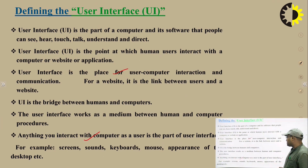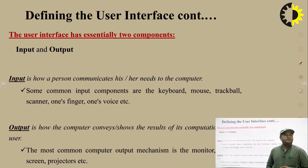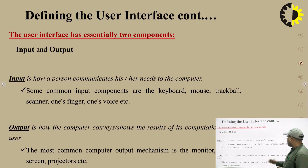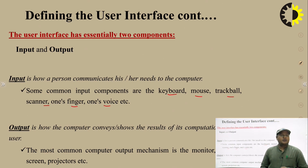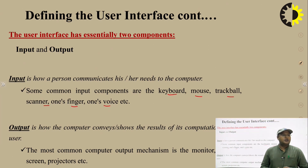Anything you interact with on a computer as a user is part of the user interface — for example, screens, sounds, keyboards, mouse, and the appearance of the desktop. The user interface has mainly two components. For input, devices such as keyboard, mouse, trackball, scanner, fingers, or voice are used. In HCI, we deal with how we give input to the computer and what output is represented. There is no need for the UI developer to understand the processing part. Output is how the computer shows the results of its computation to the user, with the most common output mechanisms being the desktop, projector, and other screens.